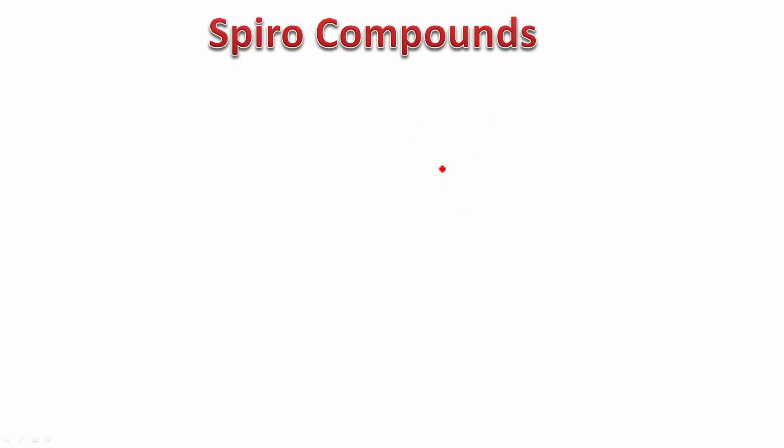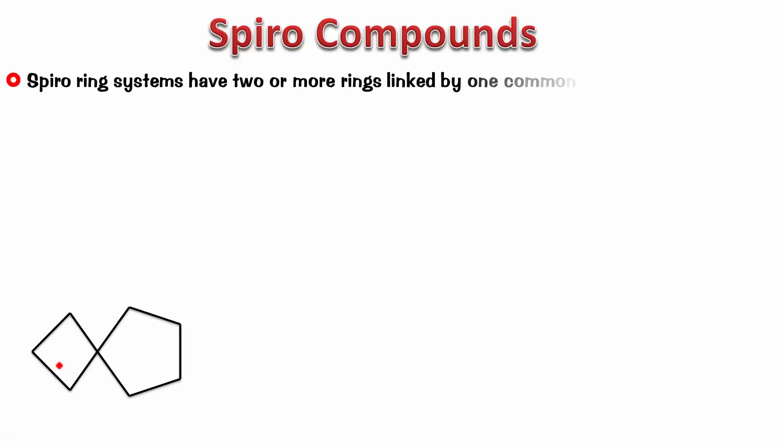Now, to get back to the definition, something like this. You see, one atom common here. Spiro ring systems have two or more rings linked by one common atom. The naming of this is similar to the bicyclo compound that we did in the previous video, but there's a bit of a difference.